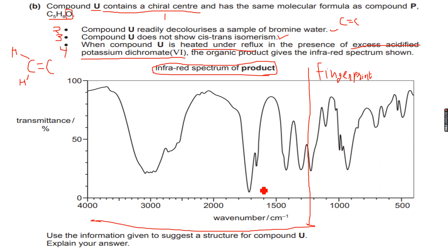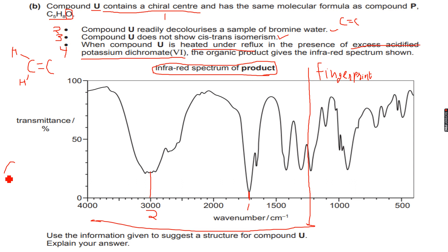Looking at the spectrum, there is a strong and sharp peak and a strong and broad peak that stand out immediately. We'll label these as peak one and peak two — they will be enough to deduce the structure. Peak one is in the range 1600 to 1700 cm⁻¹. Looking at the data booklet, 1600 to 1700 cm⁻¹ corresponds to a C=O stretch.